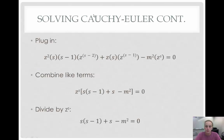The next step is to plug these derivatives into our equation. Then, if we combine like terms, we can get z to the s times the quantity of s times the quantity of s minus one plus s minus m squared equals zero. And then, if we divide by z to the s, since it equals zero, it cancels out. We get s times s minus one plus s minus m squared equals zero.